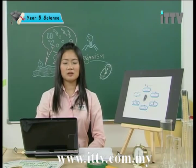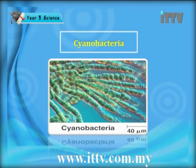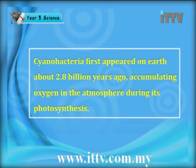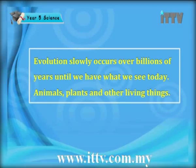The Earth started off with no oxygen and no accumulated water. So how did this oxygen come? Cyanobacteria first appeared on Earth about 2.8 billion years ago, accumulating oxygen in the atmosphere during photosynthesis. This oxygen then led to the formation of ozone, protecting the environment from direct radiation from the sun that could have killed other life forms. Evolution slowly occurs over billions of years, until we have what we see today — animals, plants, and other living things.